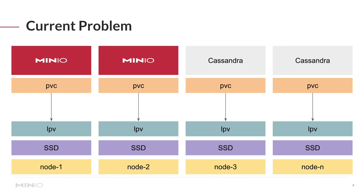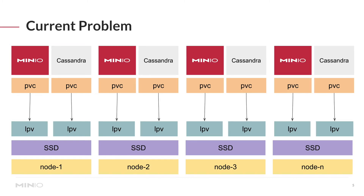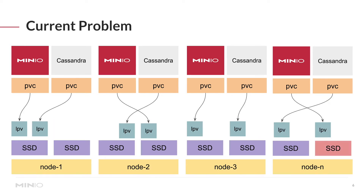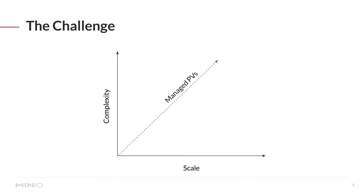This solves part of the problem, but in reality your applications don't tend to look like this. You're running multiple copies, so the more copies you need to run, the more local persistent volumes you need to manage. You'll have multiple PVCs requesting multiple local persistent volumes, sometimes on the same disk, sometimes across multiple disks. As you add scale, managing local persistent volumes manually requires very tight discipline to keep things running without problems.